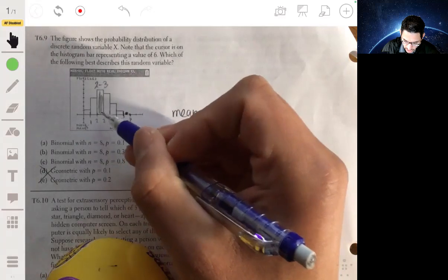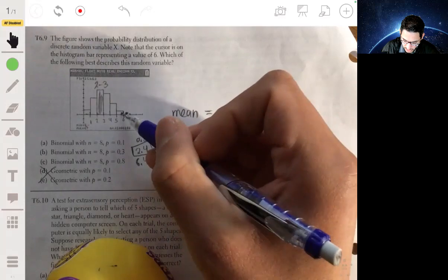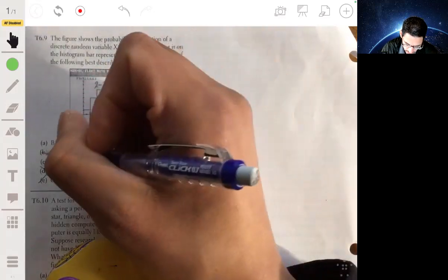Now we can see it's going to be 2.4 because 2.4 is somewhere in here. It's not 0.8, which would be way over here, and 6.4 will be way over here. So the answer will then be B.